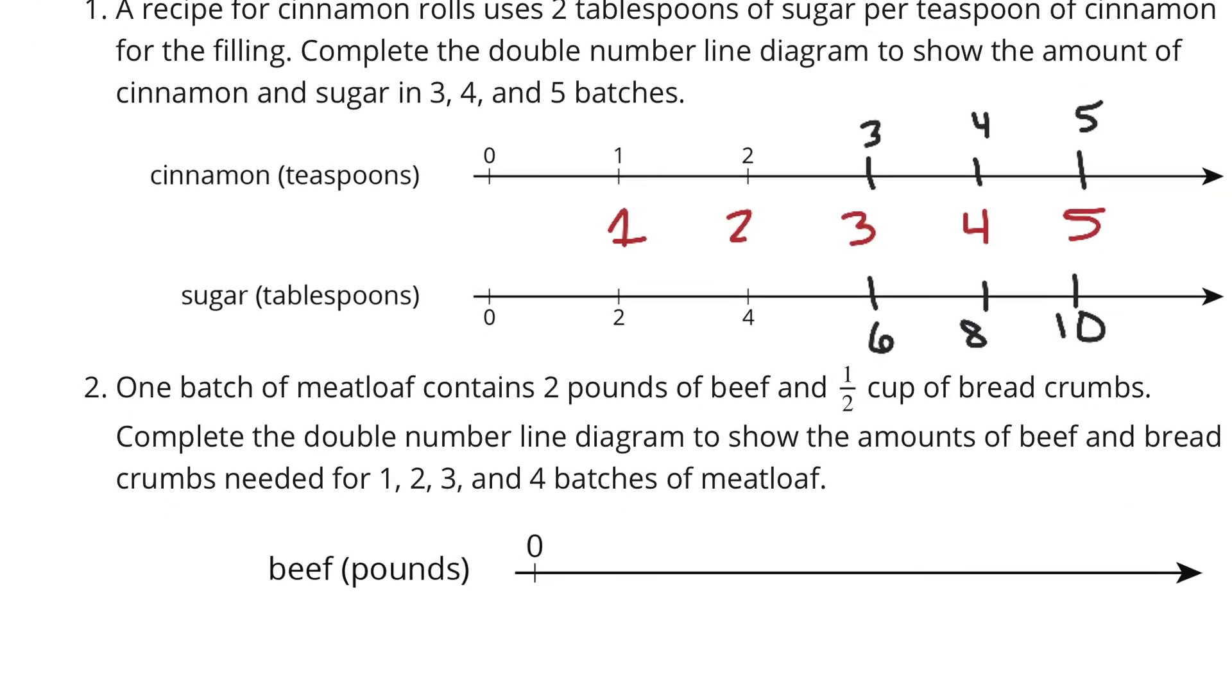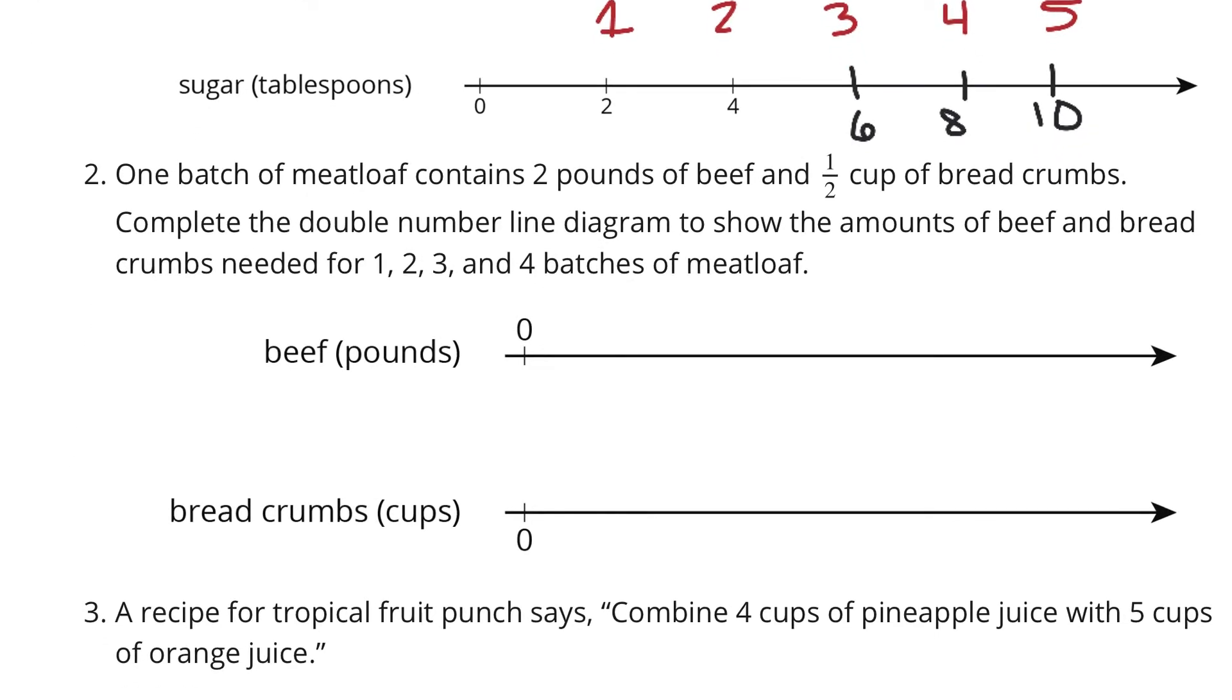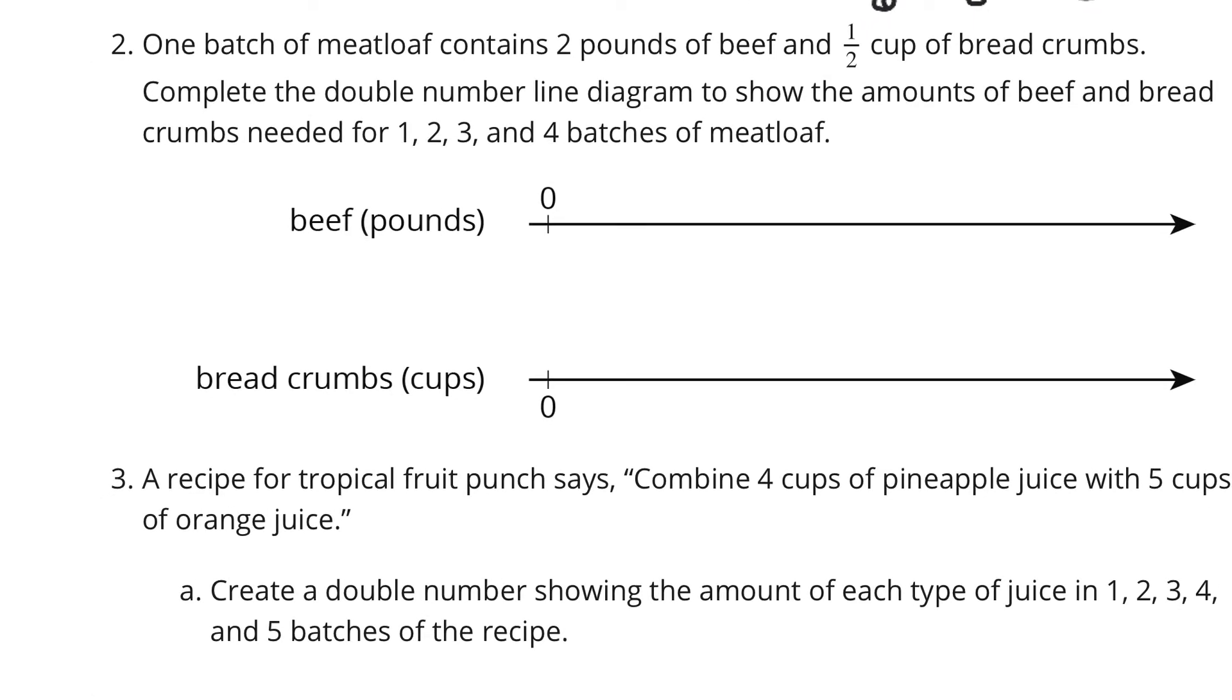Question 2, one batch of meatloaf contains 2 pounds of beef and half a cup of breadcrumbs. Complete the double number line diagram to show the amounts of beef and breadcrumbs needed for 1, 2, 3, and 4 batches of meatloaf. We're going to have to divide this up. And that should be 4 batches.